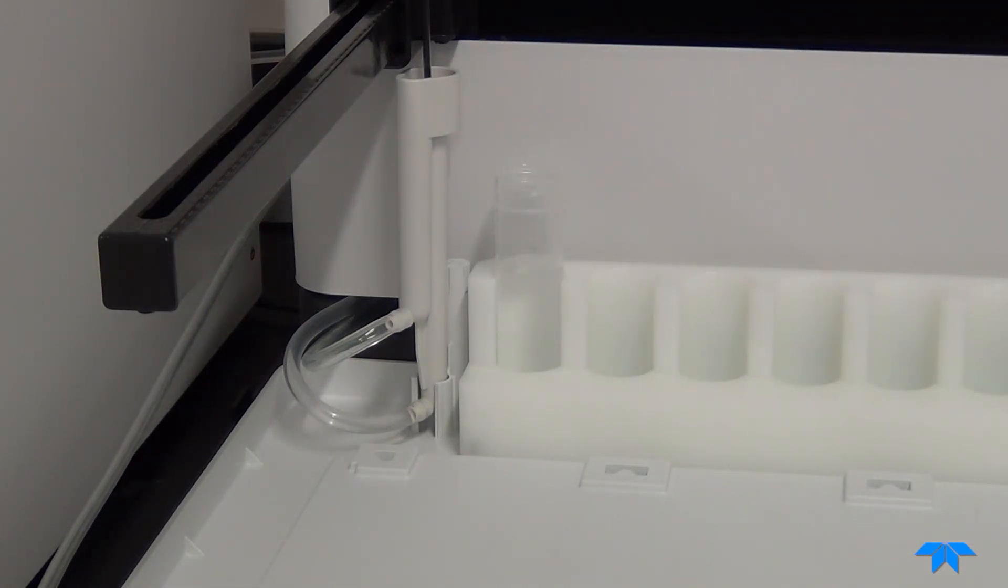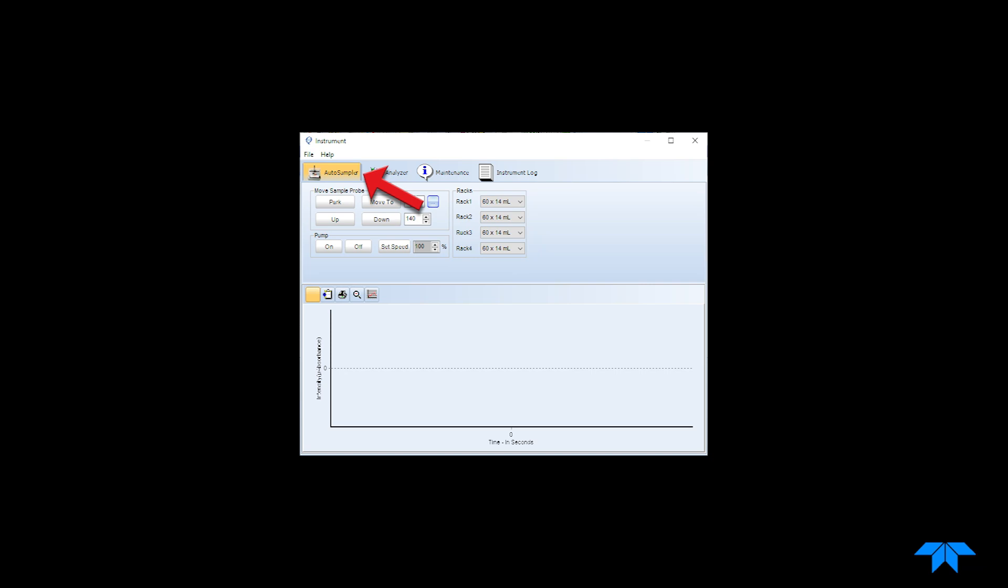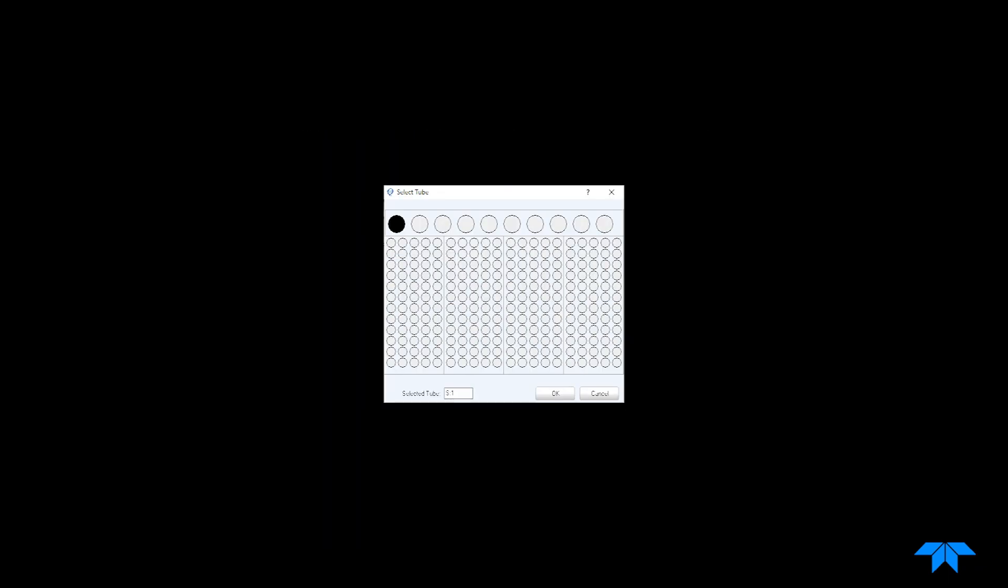In the instrument controls tab of the QuickTrace software, select the autosampler tab. Click on the ellipses button located in the move sample probe section. This will open a diagram of the autosampler positions. Select the position of your container, then select OK.